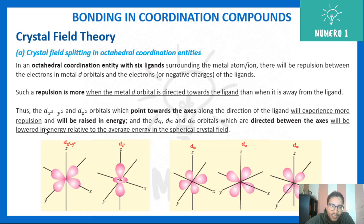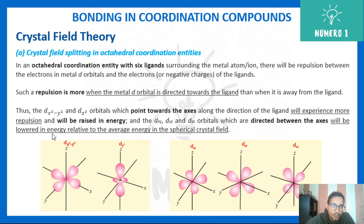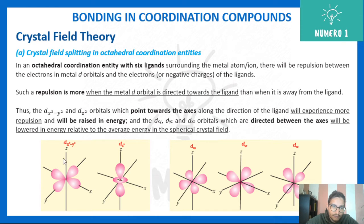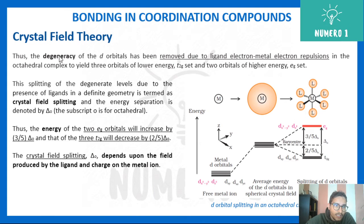dx²-y² and dz² experience much more repulsion, so their energy is raised. Whereas dxy, dyz, and dxz are directed between the axes and hence will have lower energy — they are lowered in energy relative to the average energy in the spherical crystal field. These three stay at lower energy since the ligand does not approach along their direction, while the two orbitals pointing along the axes are raised in energy.